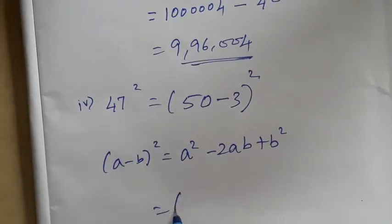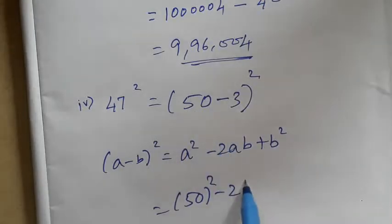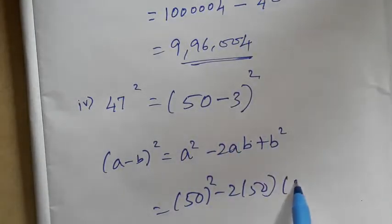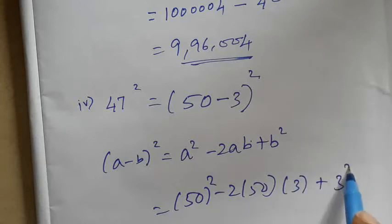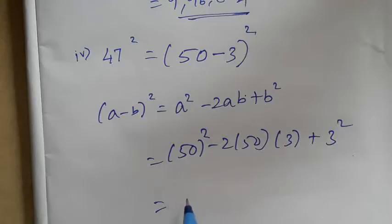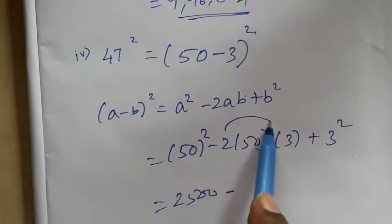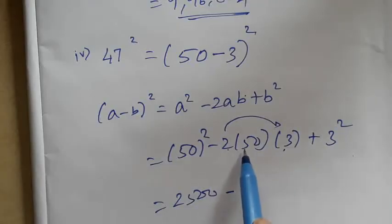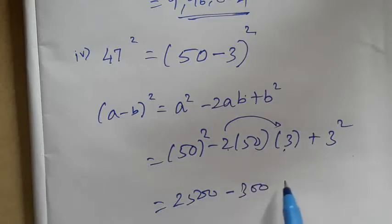So what is A? 50 squared minus 2 times A, which is 50, times B, which is 3, plus 3 squared. Okay? 50 plus 5 squared minus 2 — in the two there are 2 times 3 equals 6. So with 6, 5, 30, and one zero, plus 3 squared.